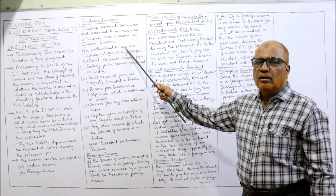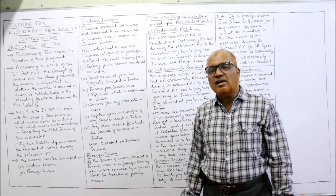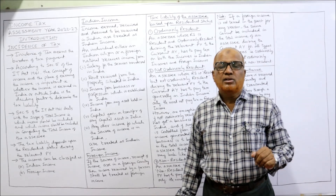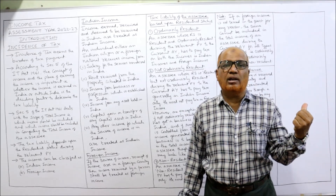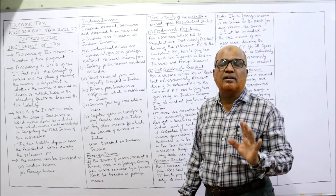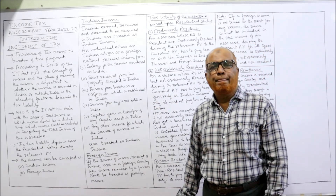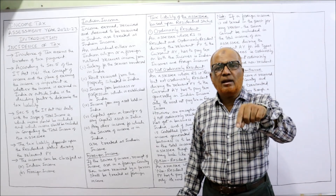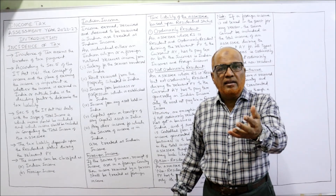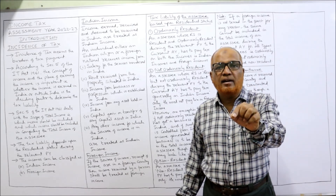First example of Indian income: salary for services rendered in India. Any salary received by rendering services in India — either by an Indian citizen or a foreign national — is Indian income. If a foreign national comes to India and works in a company, he is earning and receiving income in India, so he has to pay tax, even if he is a foreign national, because the salary is earned by rendering services in India.